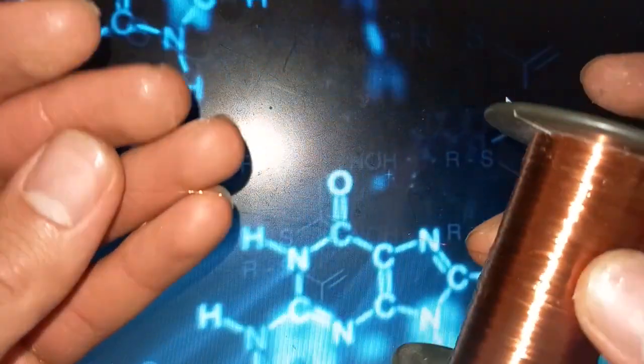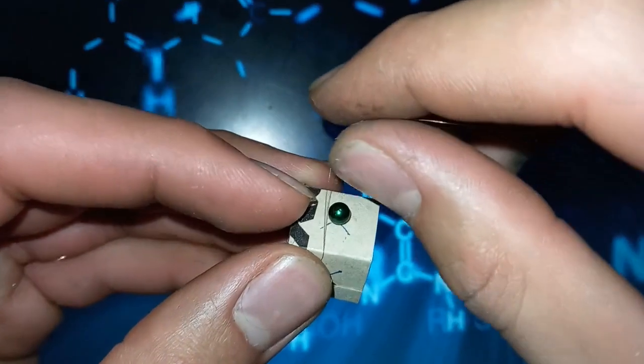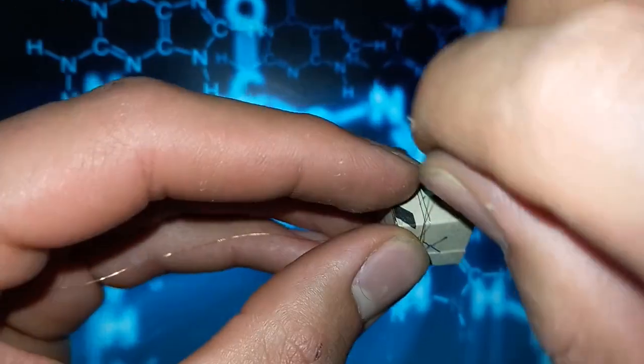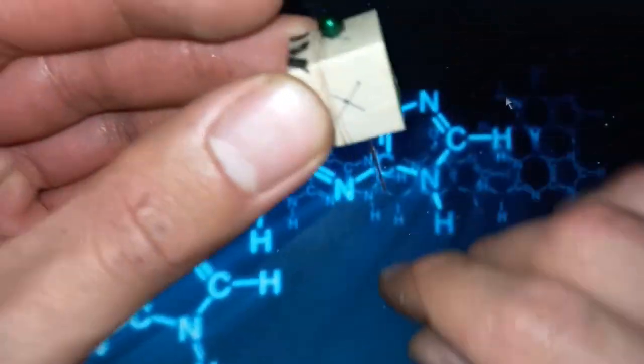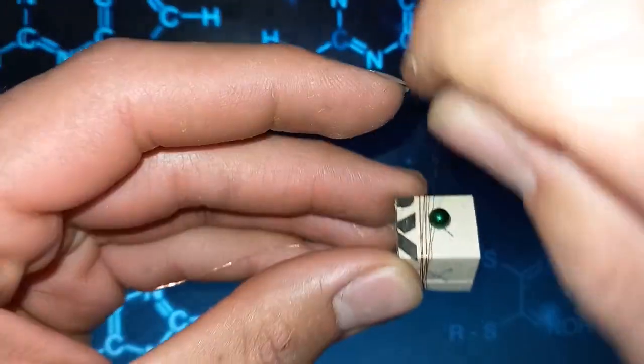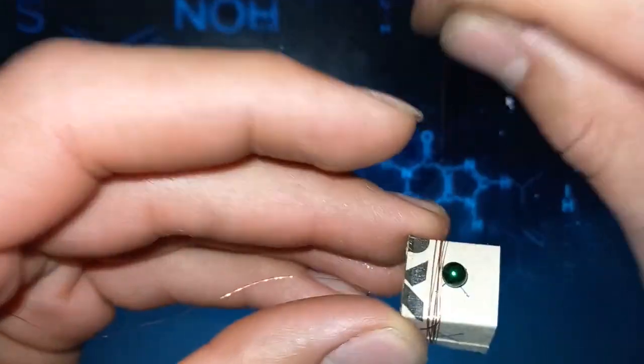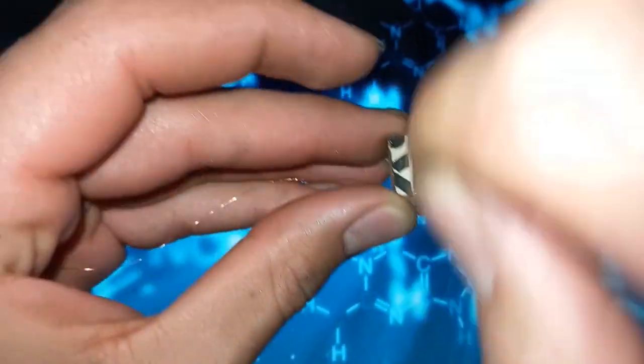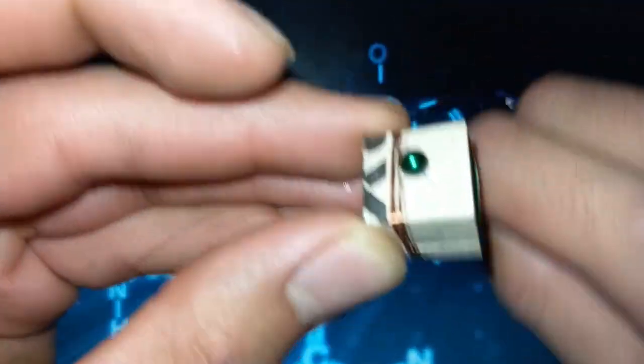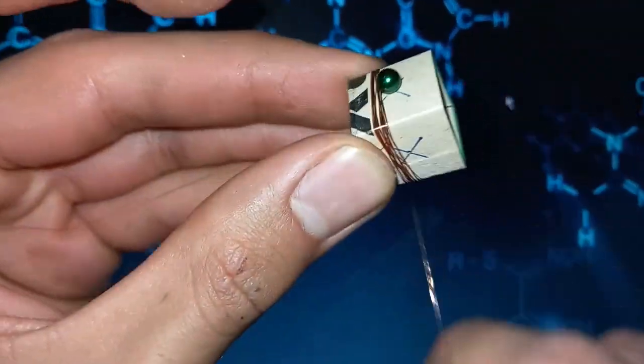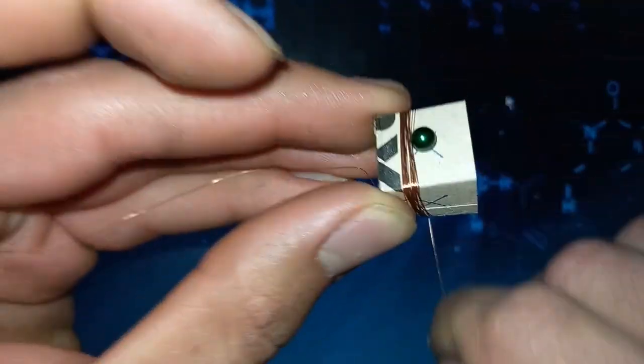Begins winding the thicker wire, counting each turn: one, two, three, four, five, six, seven, eight, nine, ten... continuing through fifteen, twenty, twenty-four.